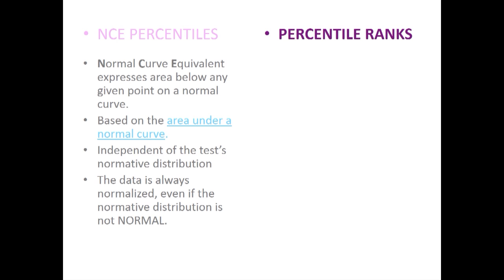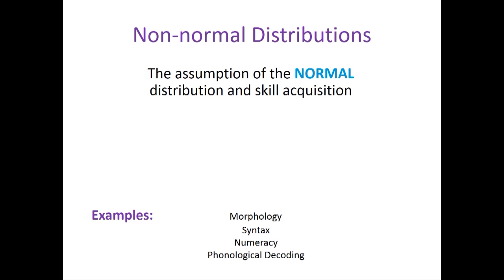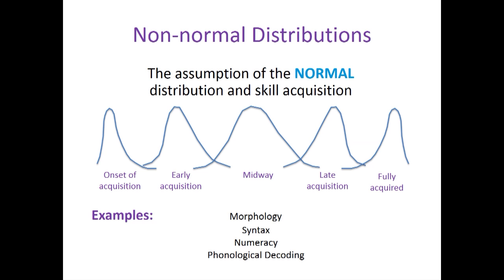Now we'll turn our attention to percentile ranks. Percentile ranks express the percent of test takers who scored below a particular score. Percentile ranks are anchored to the test score's normative distribution, rather than to a normal curve. The percentile ranks will match the NCE percentiles when the test's normative distribution is also a normal distribution. Remember, it's not always the case that skills are normally distributed in the population. When skills develop with age, it is frequently the case that skills are not normally distributed. There are lots of examples of this that impact the normative distributions for both children and adults.